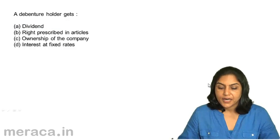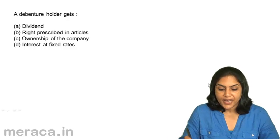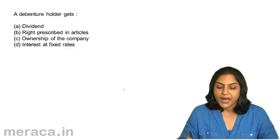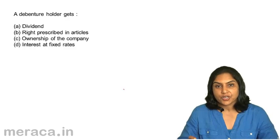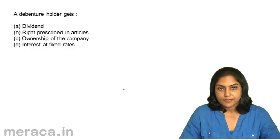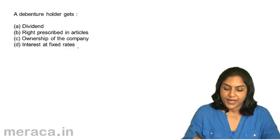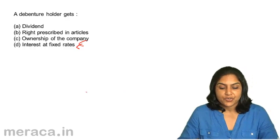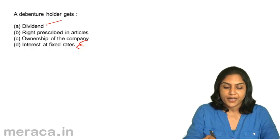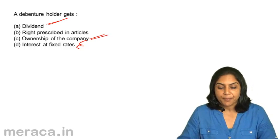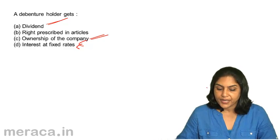Next, a debenture holder gets: A. Dividend, B. Rights prescribed in articles, C. Ownership of the company, D. Interest at fixed rates. Correct answer: D. A debenture holder gets interest at fixed rates. Dividend is received by a shareholder. Debentures do not represent ownership of the company. So, correct answer is D — interest at fixed rates.